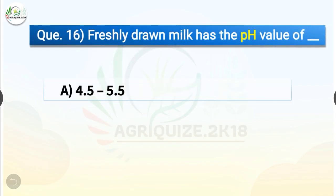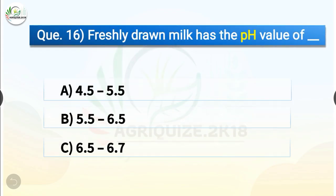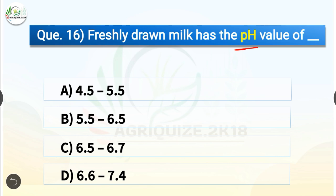Question number 16. Freshly drawn milk has a pH value of dash. The options are 4.5 to 5.5, 5.5 to 6.5, 6.5 to 6.7, or 6.6 to 7.4. The correct answer is option C, 6.5 to 6.7. So freshly drawn milk has a pH value of 6.5 to 6.7.